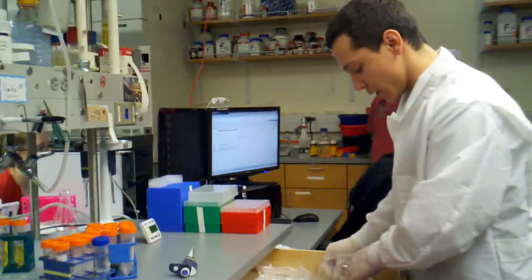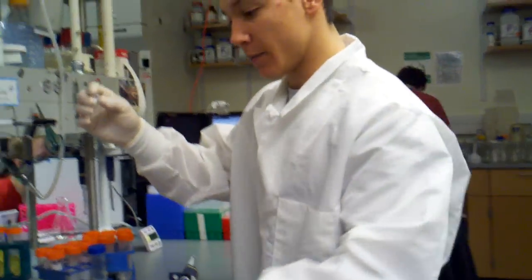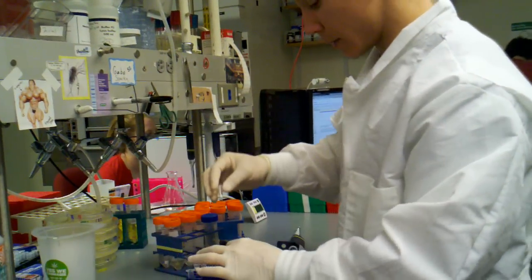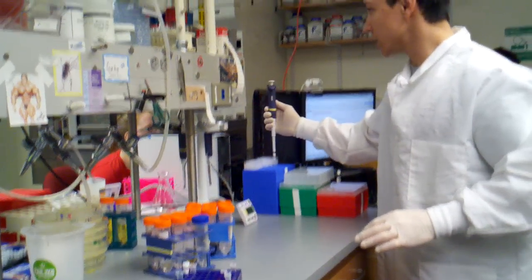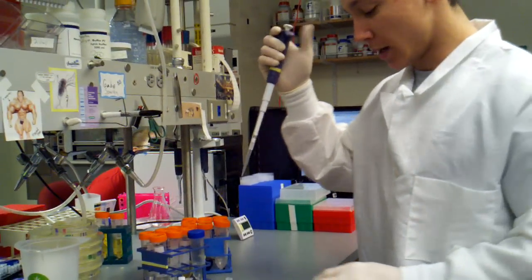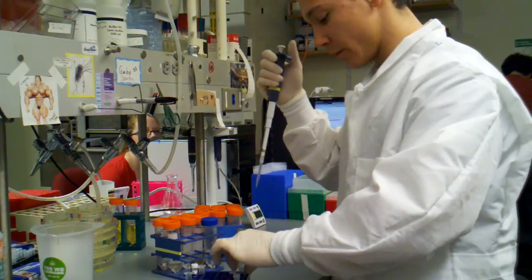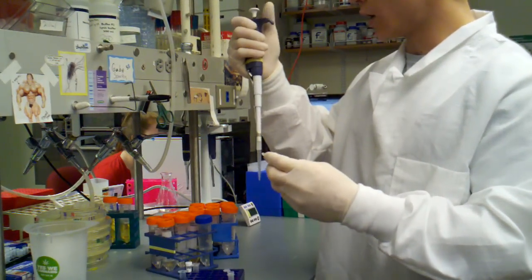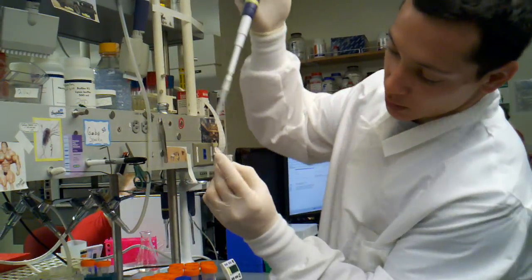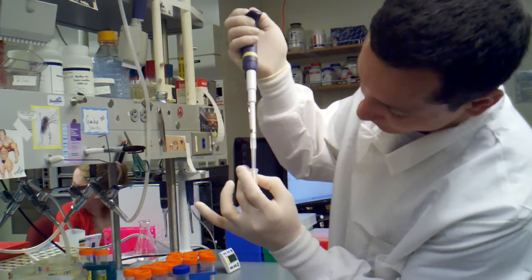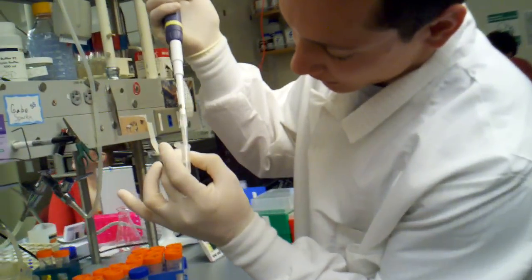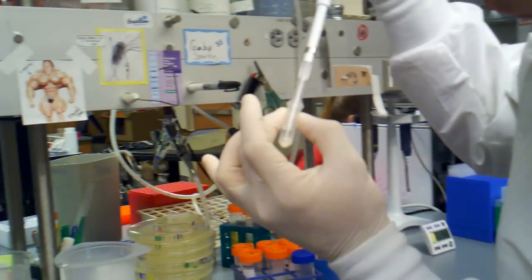We're going to pipette it into a mini prep column. I'll set my P1000 to the full 1000, which is more volume than we actually have, but it allows you to try to get it all in one fell swoop. I'm going to carefully put my pipette tip in, and the top of the liquid has a layer of white stuff that you want to try to avoid.